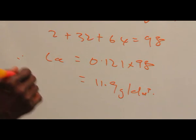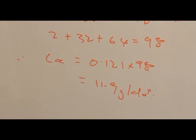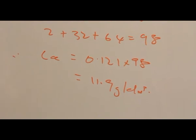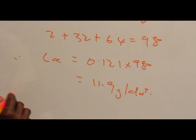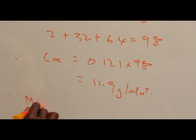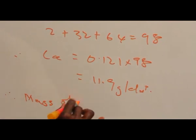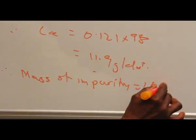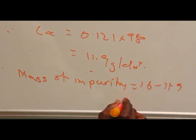So this is the concentration of the pure acid, but we have earlier determined that the impure acid concentration is 16 grams per dm³, and so, mass of impurity is 16 minus 11.9, which equals 4.1 grams per dm³.